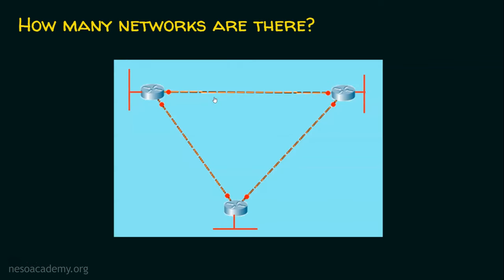Pause this video for a while and find out how many networks are there in the scenario. If your answer is three networks, it's a wrong answer. In this scenario, we have a total of six networks. We have network number one as a local area network connected to a router, then network number two, and network number three. If your answer is three, you are right up to this stage, but we still have three more networks.